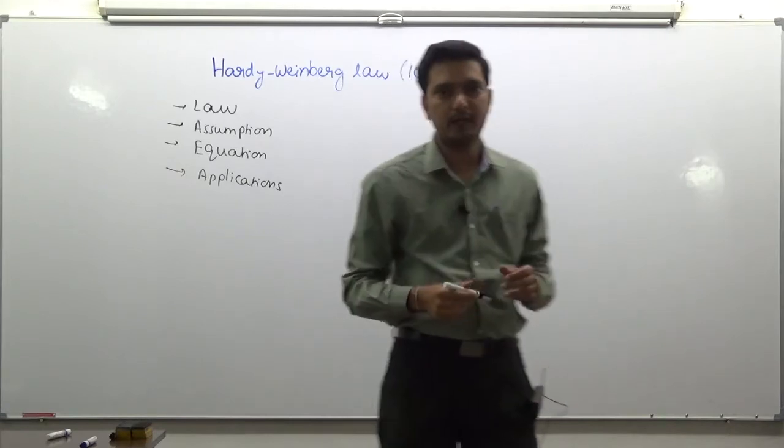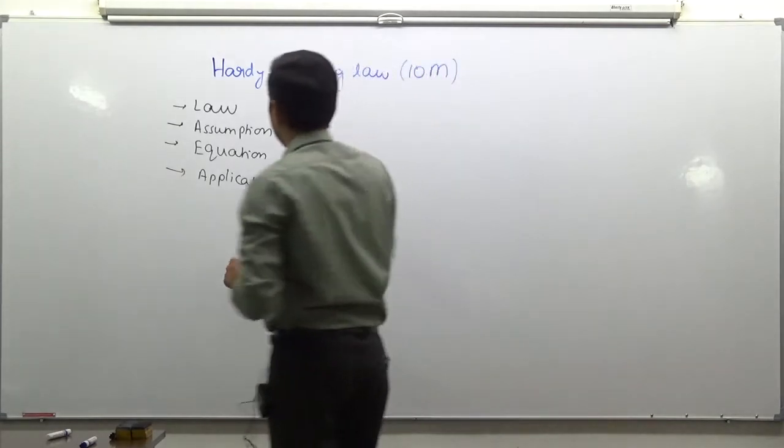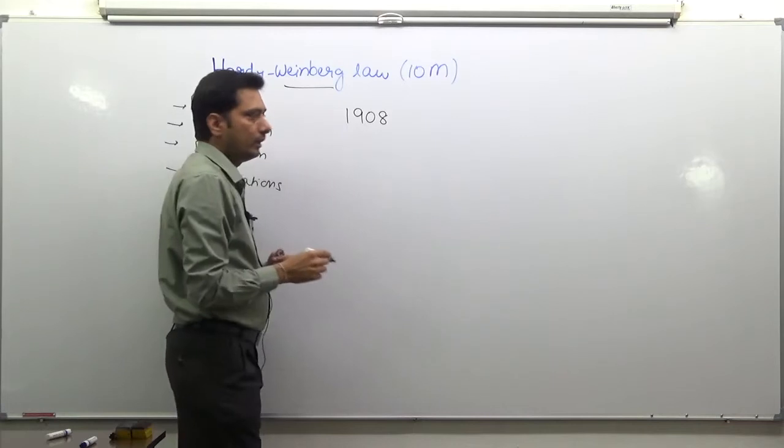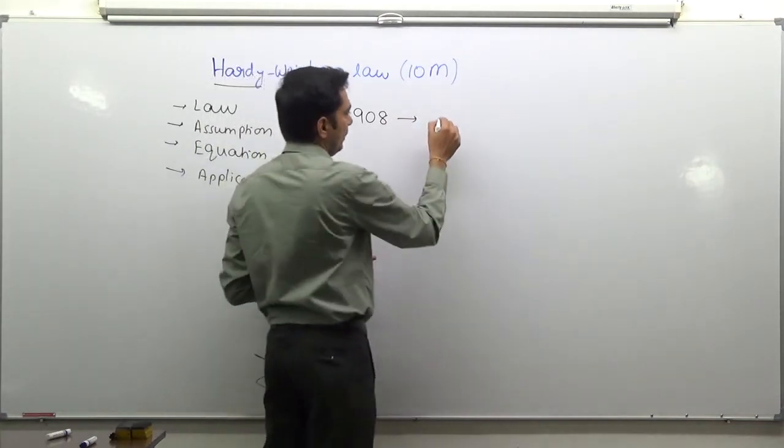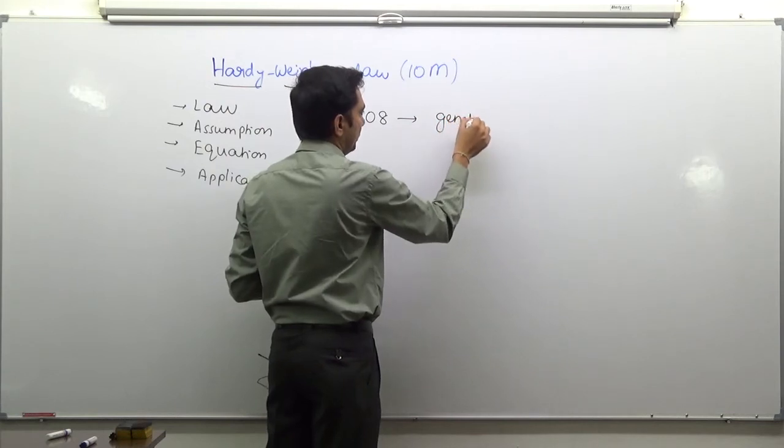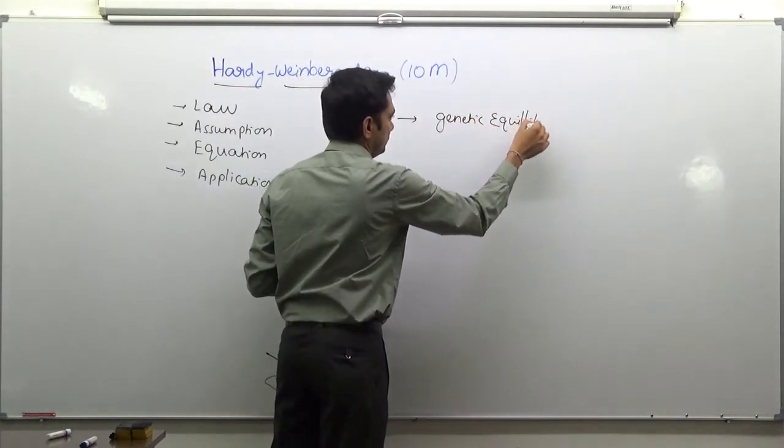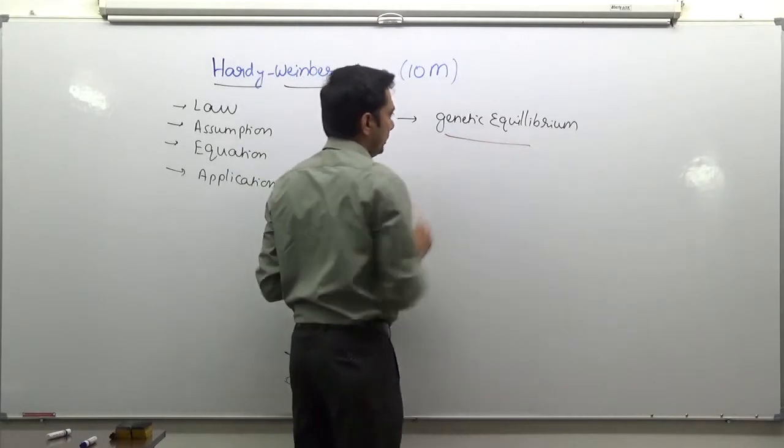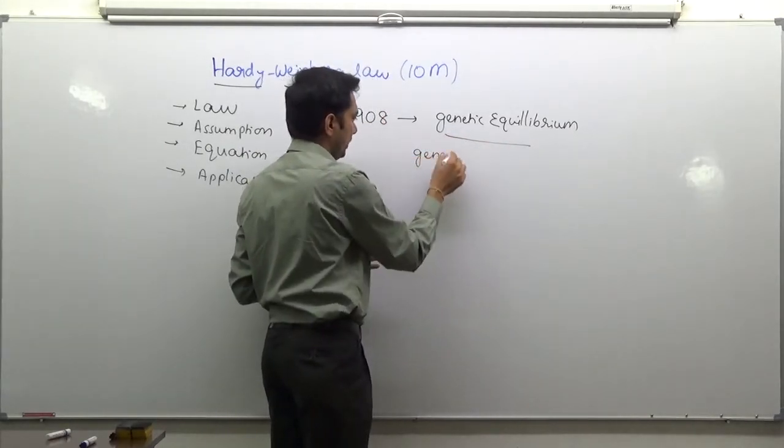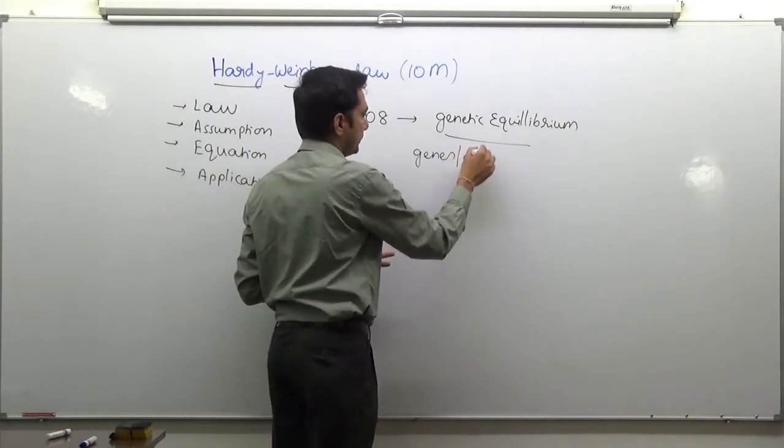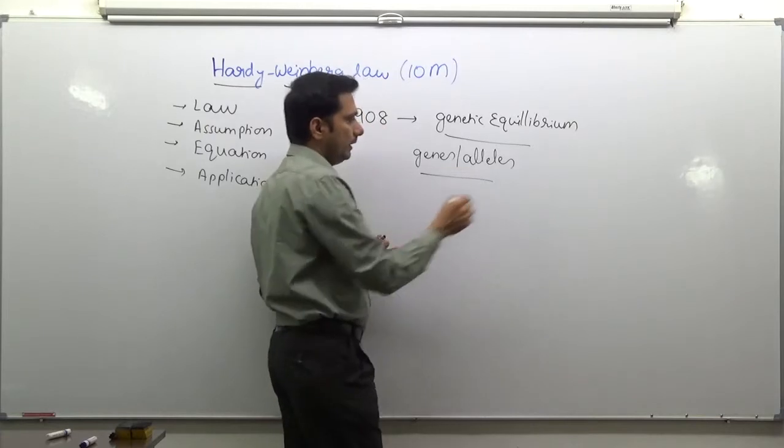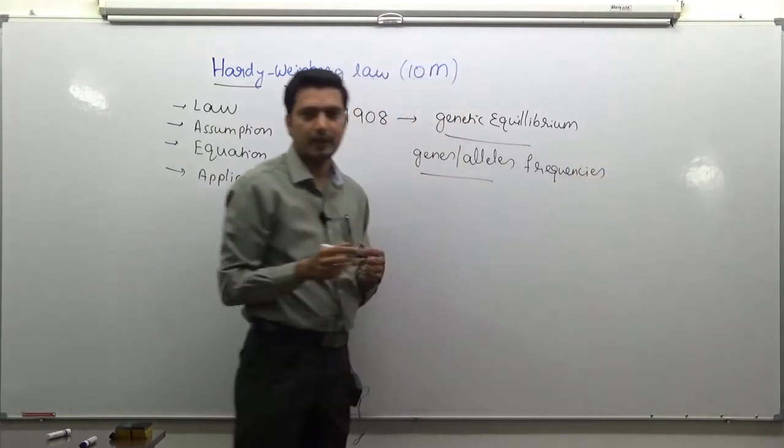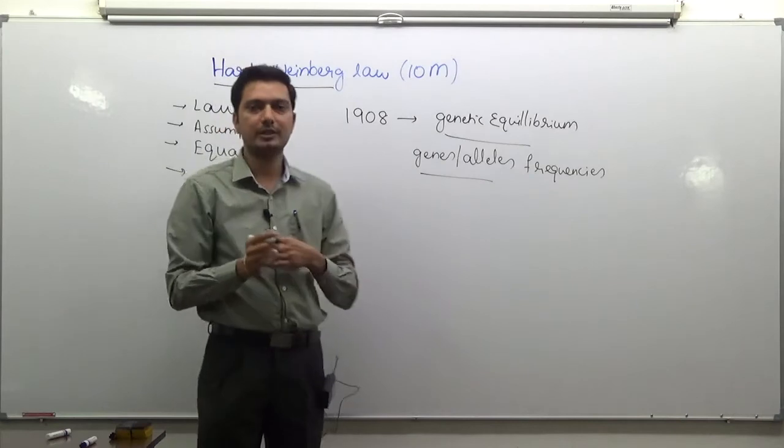So to begin with, what exactly is Hardy-Weinberg Law? As the name suggests, it is given by two scientists, Hardy and Weinberg in 1908, describing genetic equilibrium. They are talking about the genes and of course, alternate forms of these genes that are alleles and their frequencies. This actually forms the fundamental basis for population genetics that evolved over time.